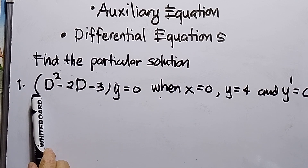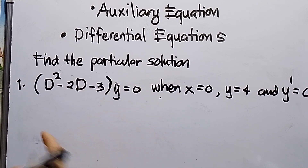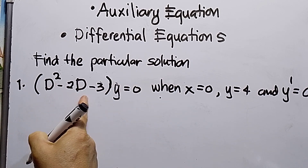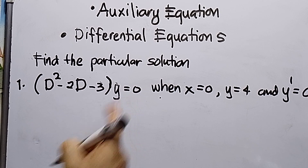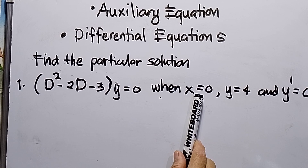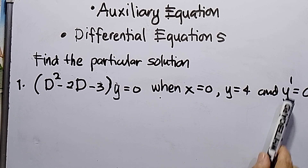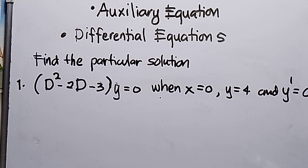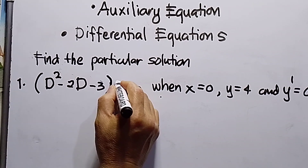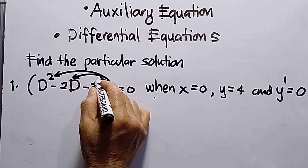Number one: (D squared minus 2D minus 3) times y is equal to zero, where the conditions are: when x equals zero, y equals 4, and y prime, or the first derivative, is equal to zero.